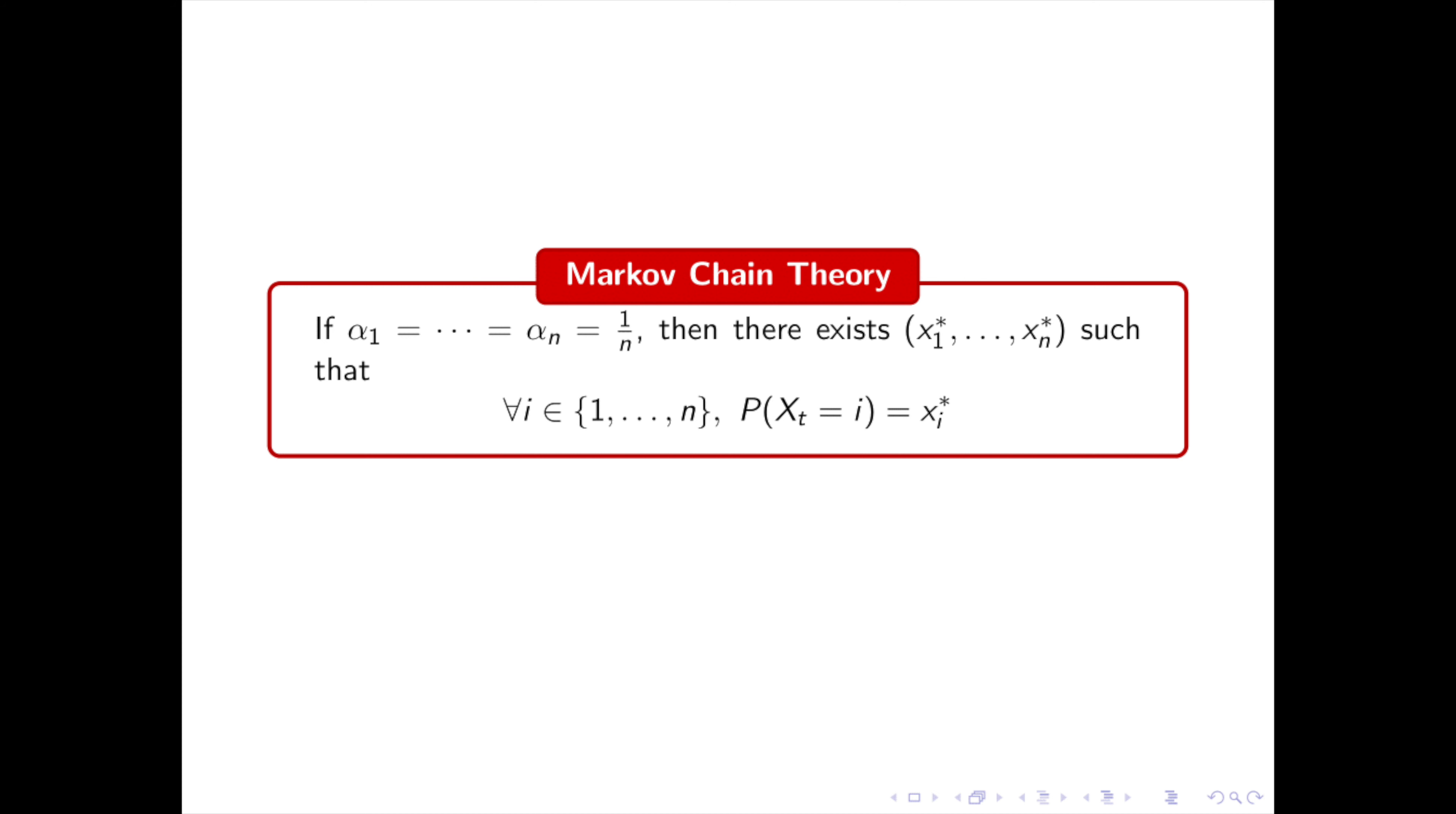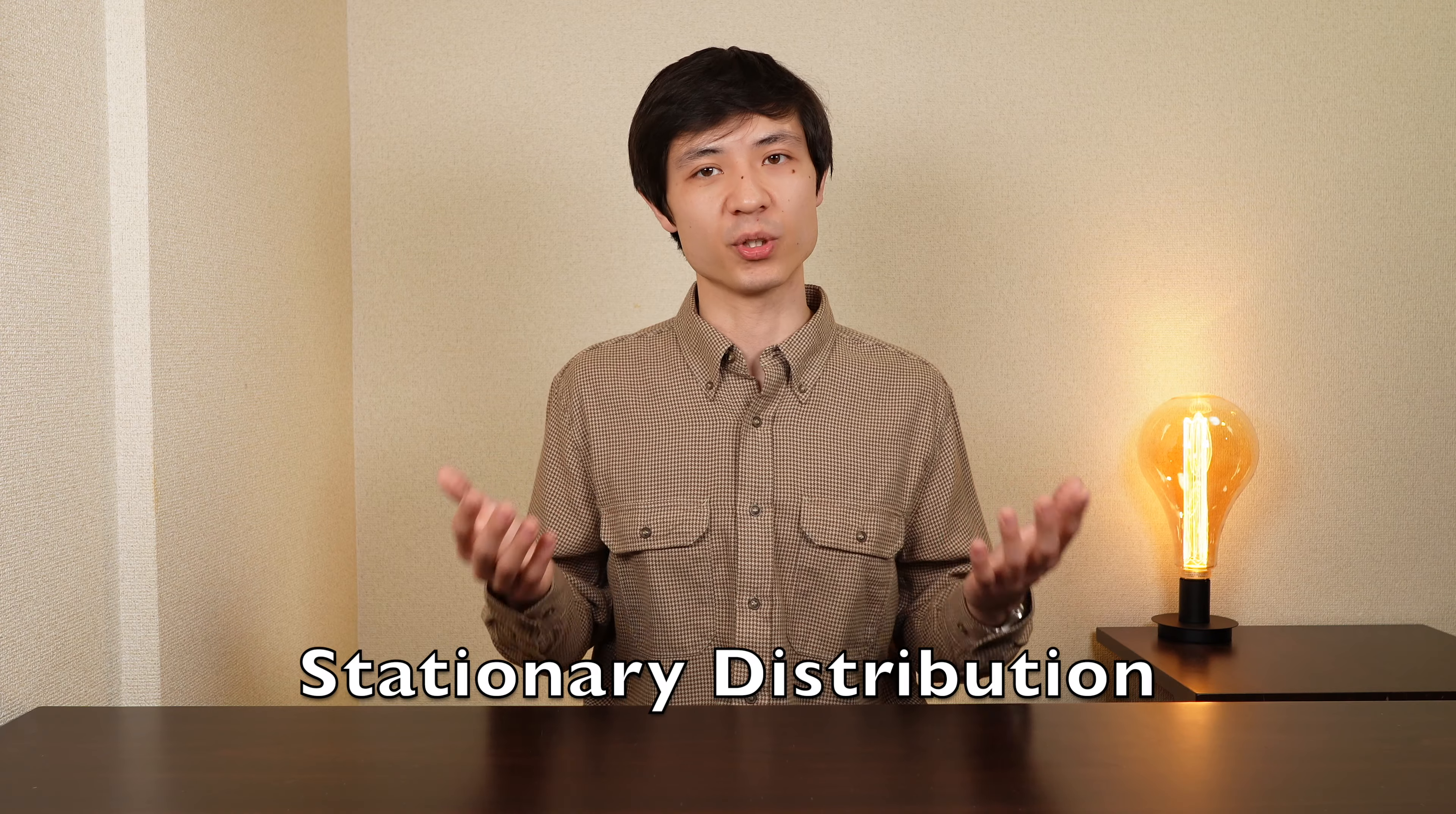Now if we only know the starting page x0, where will the surfer be after many steps t? Markov chain's theory states that if the teleportation distribution is uniform, then there exists a probability vector x1 star, x2 star, xn star, such that no matter the starting page x0, the probability that xt is at i is equal to xi star. x1 star to xn star is called the stationary distribution of the Markov chain xt. This is also true for some other teleportation distributions, but I won't get into the details now. What is important for us is that the probability that the user visits page i is equal to xi star. But by definition, this is equal to the rating ri of page i.